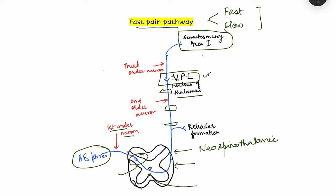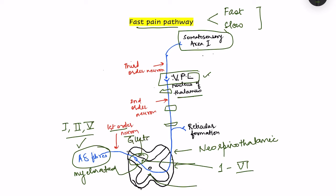To differentiate the fast pain pathway from the slow pain pathway, note key features: the first order neuron is the A-delta fibers, which are faster and myelinated. In the dorsal horn, neurons are arranged in various laminae — there are laminae 1 to 6 — and A-delta fibers synapse in laminae 1, 2, and 5. The neurotransmitter released at this level is glutamate, an excitatory neurotransmitter that releases and acts fast.